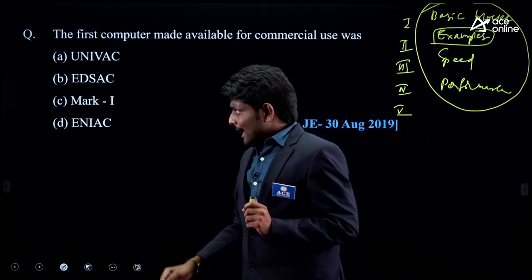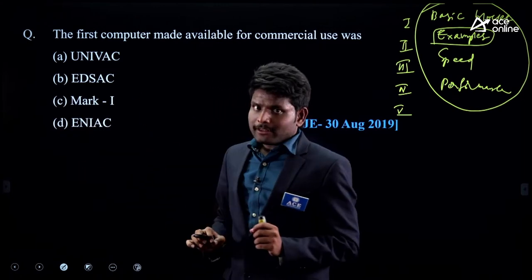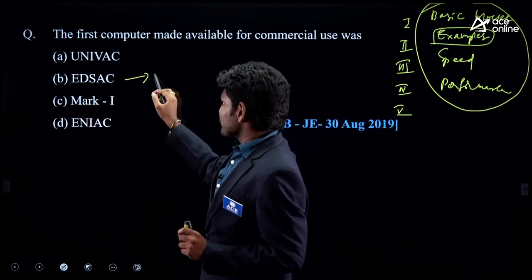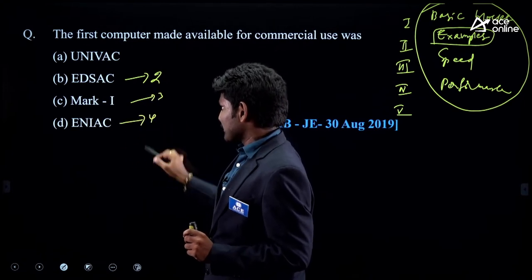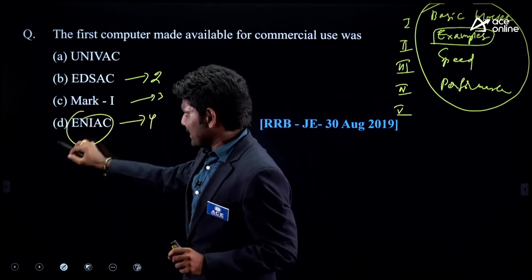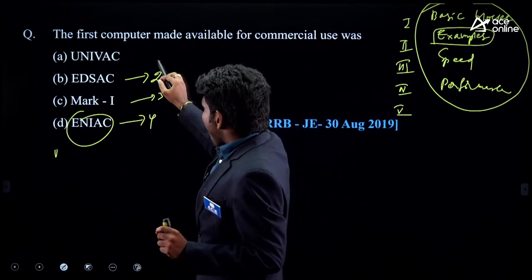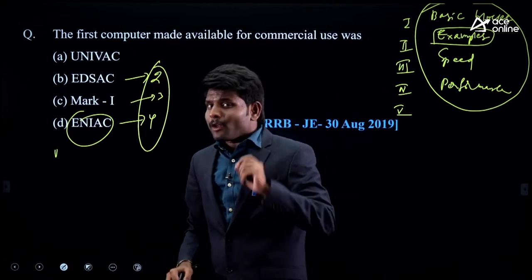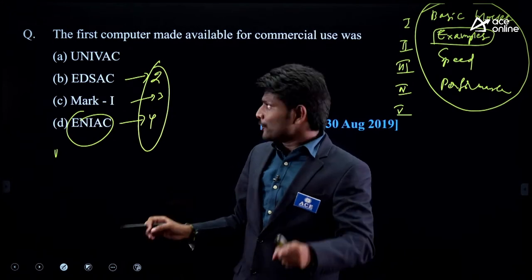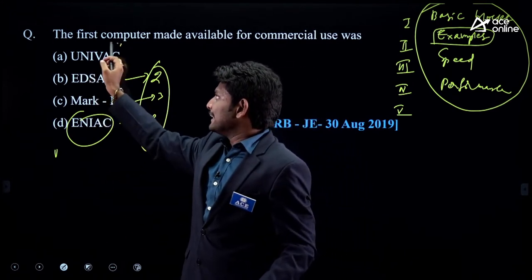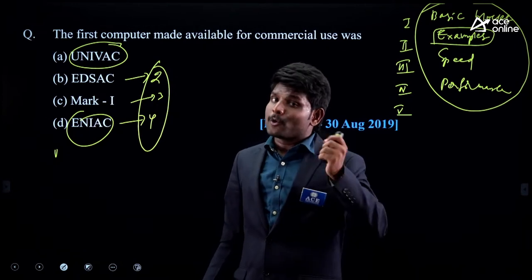If you know the example computers of each generation, let's say the question paper setter gives three computers from other generations as options — second generation, third generation, fourth generation — to be specific, only one is from first generation. Then you can easily choose the first generation computer even without knowing the direct answer.